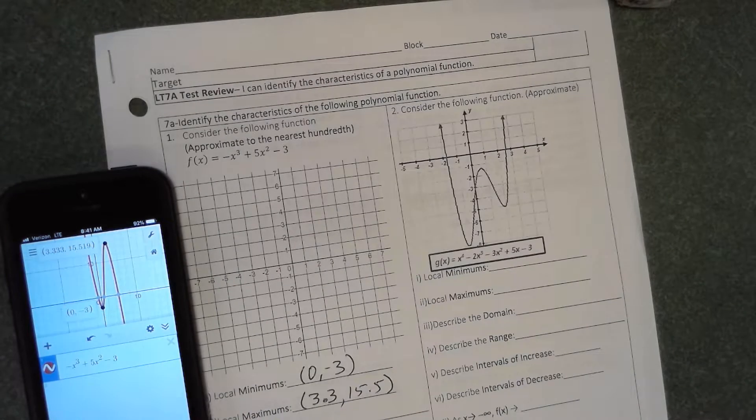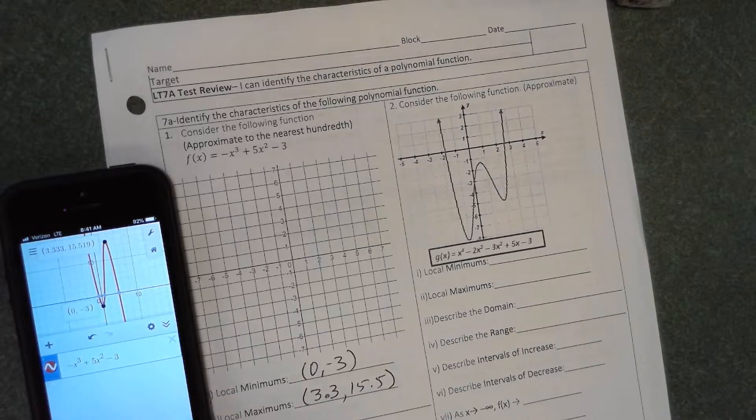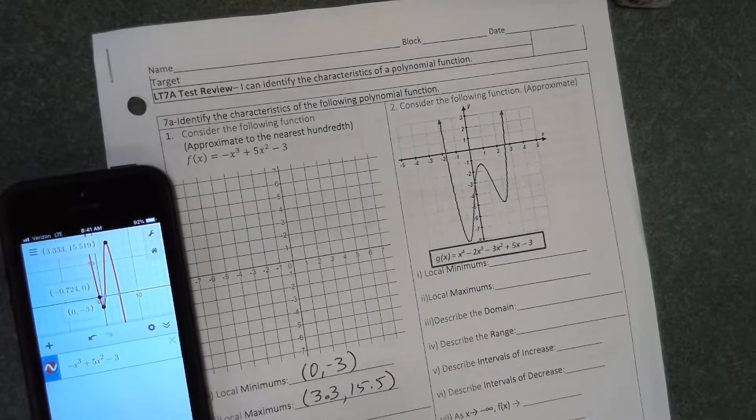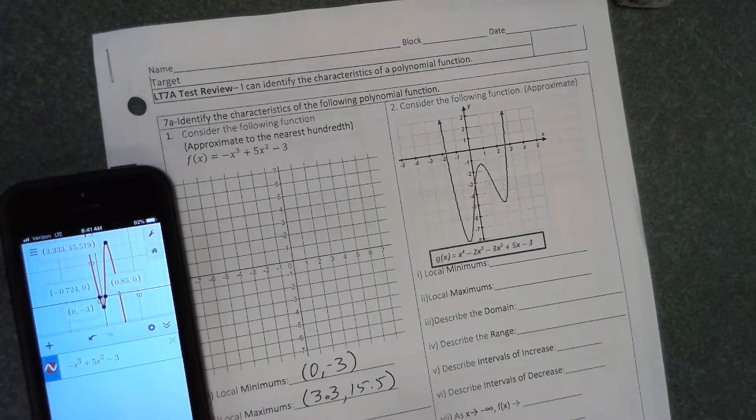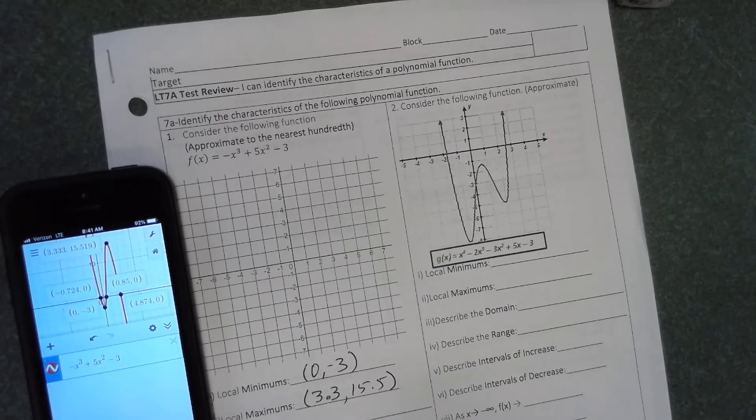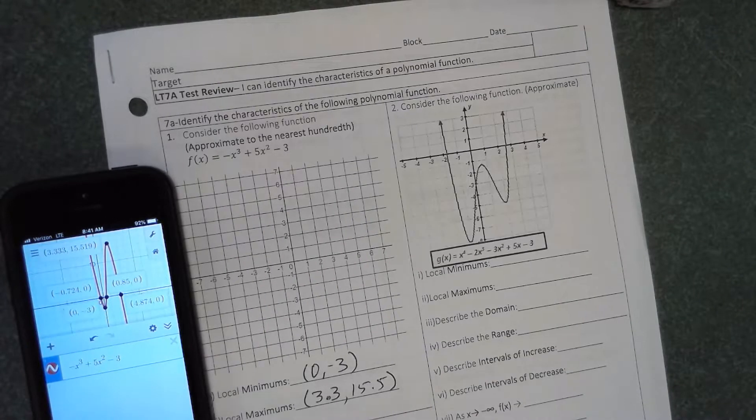We do have to graph this because we need our x-intercepts. We have an x-intercept at negative 0.7, x-intercept at 0.9 approximately, and at 4.9 approximately. Then we need a y-intercept. Well, that just happens to be the local minimum. It doesn't always happen that way, just in this case it does.